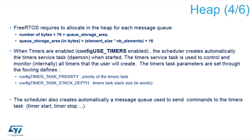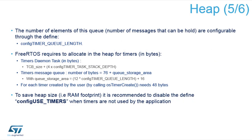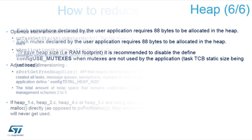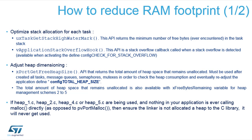For timers there is also a need to define a queue length, since each record holds the initial time, delay length, and callback function. If you want to schedule many different events you must increase the timer queue length so all events fit. Additionally, semaphores require 88 bytes allocated in the heap; if you don't need them you can exclude mutexes by disabling the use_mutexes macro in the FreeRTOS configuration.